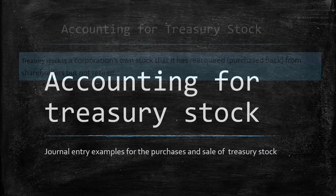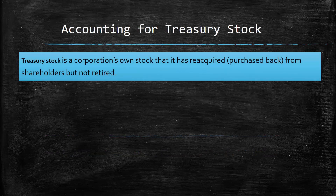Accounting for treasury stock. Treasury stock is a corporation's own stock that it has purchased back from the market. So the shares were already issued and were being held by shareholders, and now the corporation is buying them back.